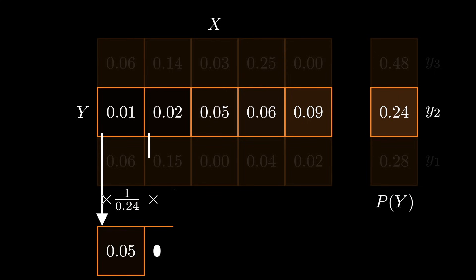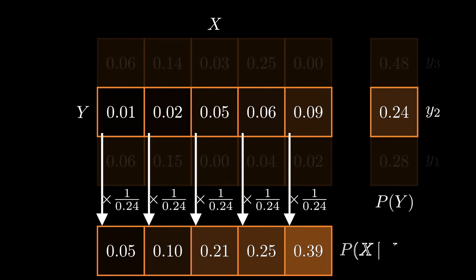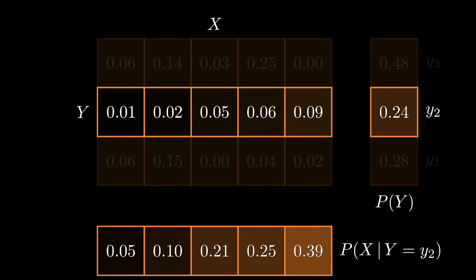I would essentially ignore the other two rows of this table. Then I would divide that row by the marginal probability that y is equal to y2.